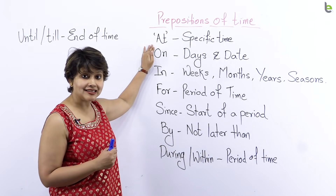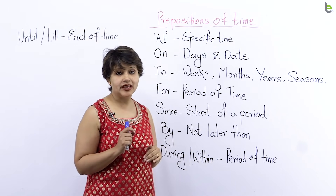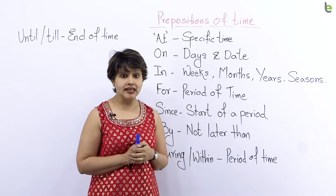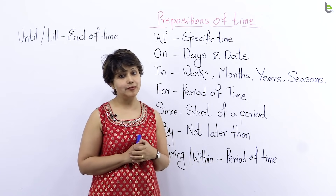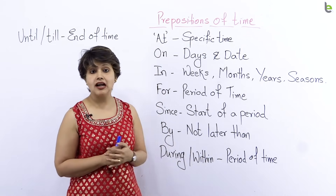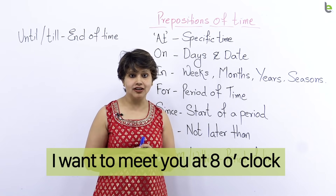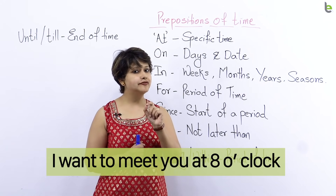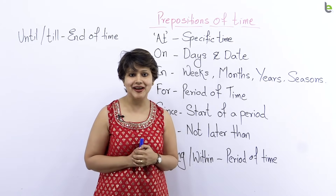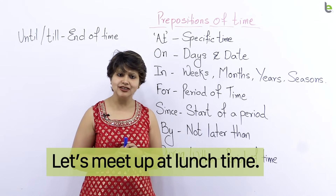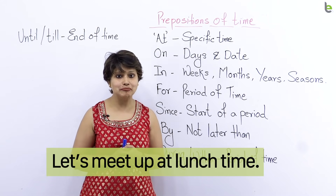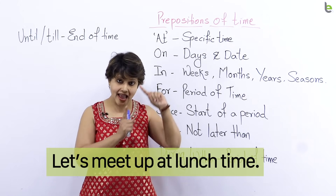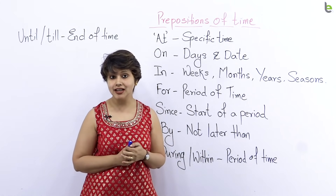Pehla preposition hai: AT. At ka istimal aap tab karayin jab aap koi specific samay ke baare mein batana chahte hain — yaani koi nirdharit samay. For example: 'I want to meet you at 8 o'clock.' Main tumse milna chahti hun aath bajay — mene specific bola ki mujhe aath bajay hi tumse milna hai. Or: 'Let's meet up at lunch time.' Chalo hum lunch time pe milte hain. Mene specify kiya ki mujhe kab milna hai: at 8 o'clock and at lunch time.